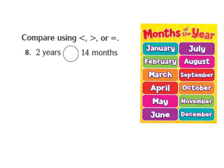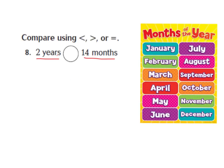Our time conversion on our reference sheet doesn't have years to months, but this is something we should know already — there are 12 months in a year. So one year equals 12 months. Now remember, in order to compare units of measure, we have to have the same units of measurement. We have years here and months here, so we need to change them to the smallest units of measurement, which in this case are months. So I need to change my two years to months.